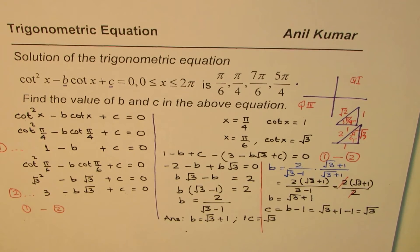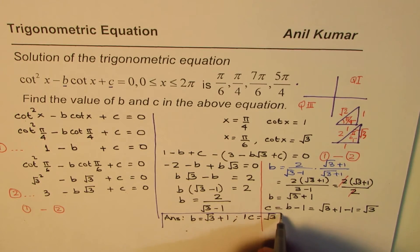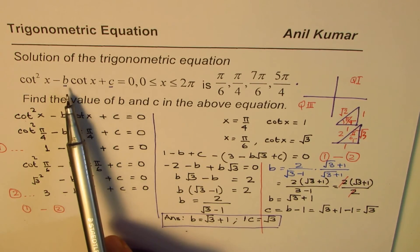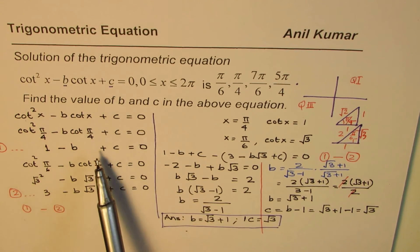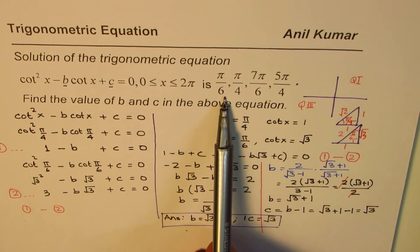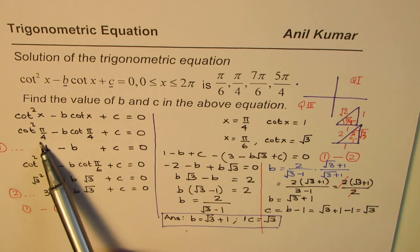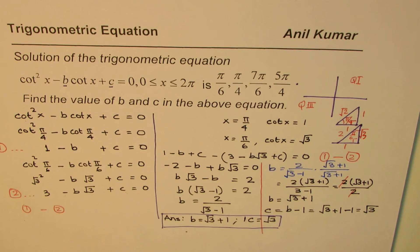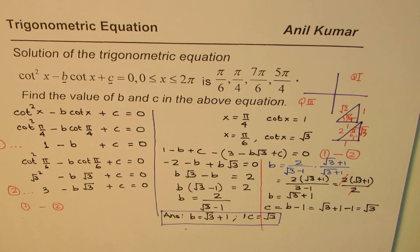We can actually find both these values using this approach. We had an equation with 2 unknowns. To find these unknowns, we created 2 different equations using 2 of the given solutions — π/4 and π/6. Substituting the cot values, we solved to find b = √3 + 1 and c = √3. I hope that helps. You can share and subscribe. Thank you and all the best.